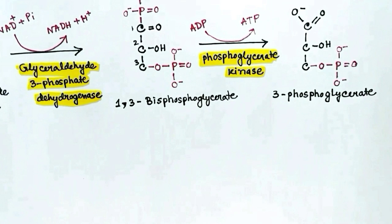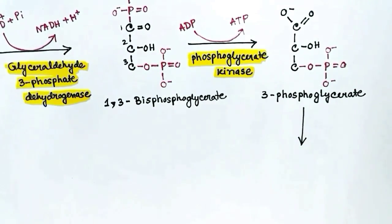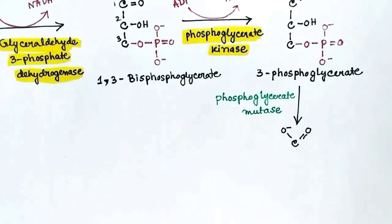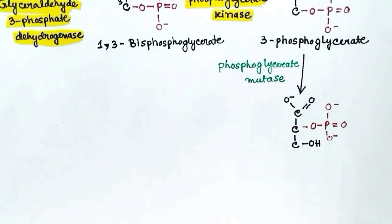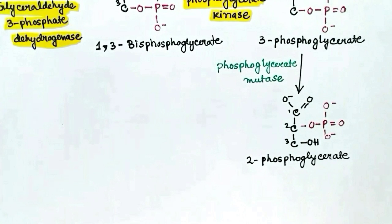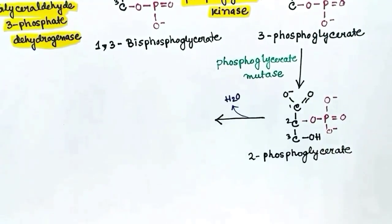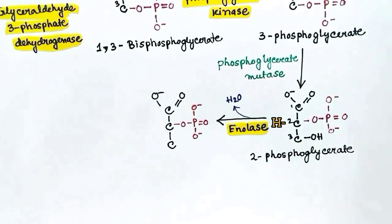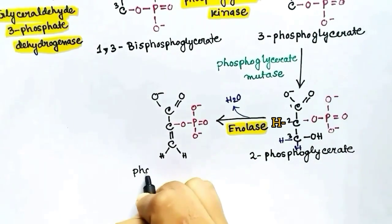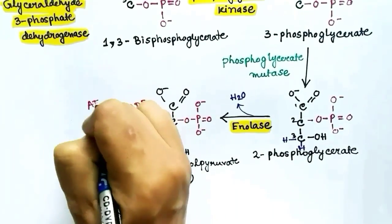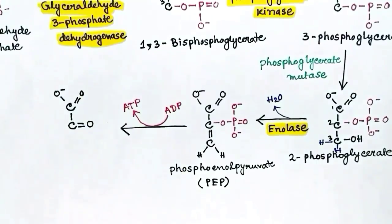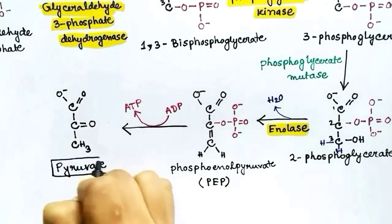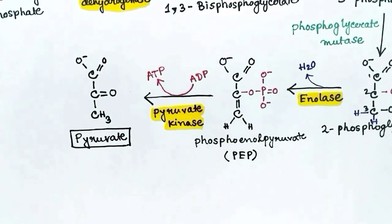1,3-Bisphosphoglycerate releases one phosphate group, which is received by ADP to make ATP. The enzyme is phosphoglycerate kinase, forming 3-phosphoglycerate. Then phosphoglycerate mutase shifts the phosphate from the third carbon to the second carbon, forming 2-phosphoglycerate. Enolase then acts on it, releasing one molecule of H₂O, and the remaining molecule is phosphoenolpyruvate (PEP).